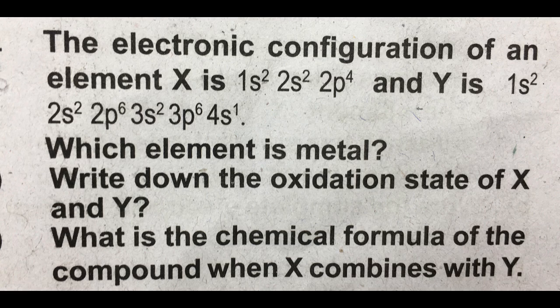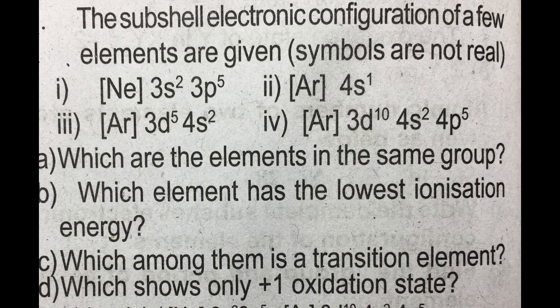Question number 8: The electronic configuration of element X is 1s2, 2s2, 2p4, and Y is 1s2, 2s2, 2p6, 3s2, 3p6, 4s1. Question A: Which element is a metal? Question B: Write down the oxidation state of X and Y. Question C: What is the chemical formula of the compound when X combines with Y?